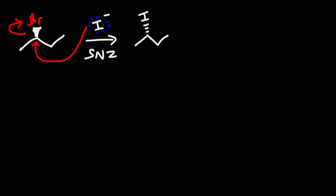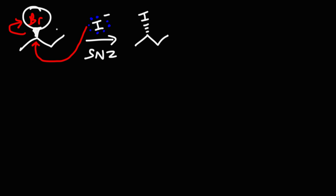What is the rate law expression for this SN2 reaction? When you hear the word SN2, think of second-order nucleophilic substitution reaction. It's a substitution reaction in the sense that we're substituting bromide with iodide. It's nucleophilic in the sense that we're substituting bromide with the nucleophile iodide. And it's second-order in the sense that the rate depends on the concentration of the substrate and the concentration of the nucleophile.